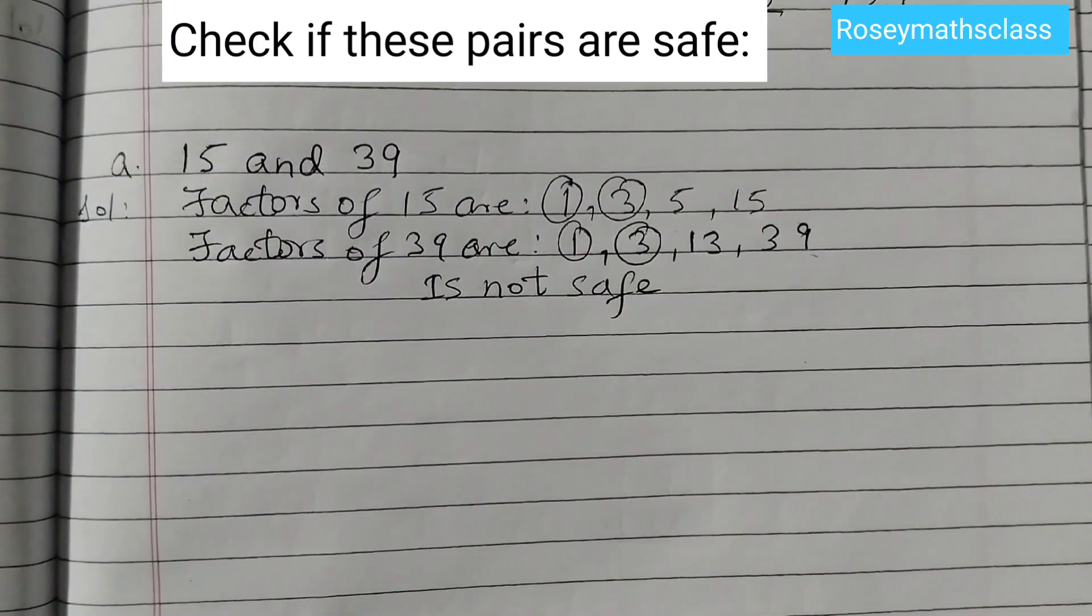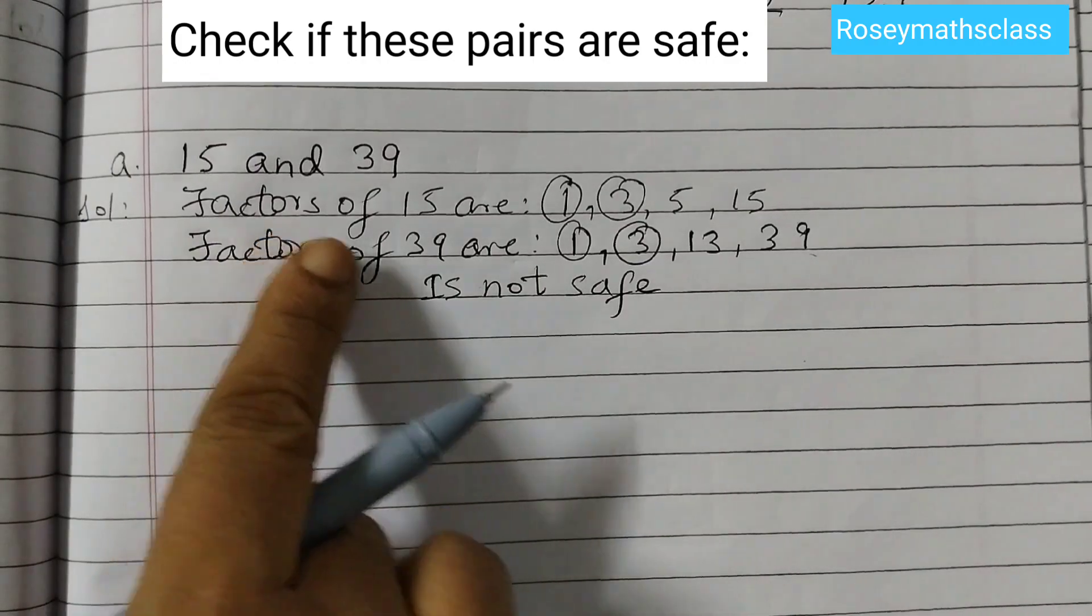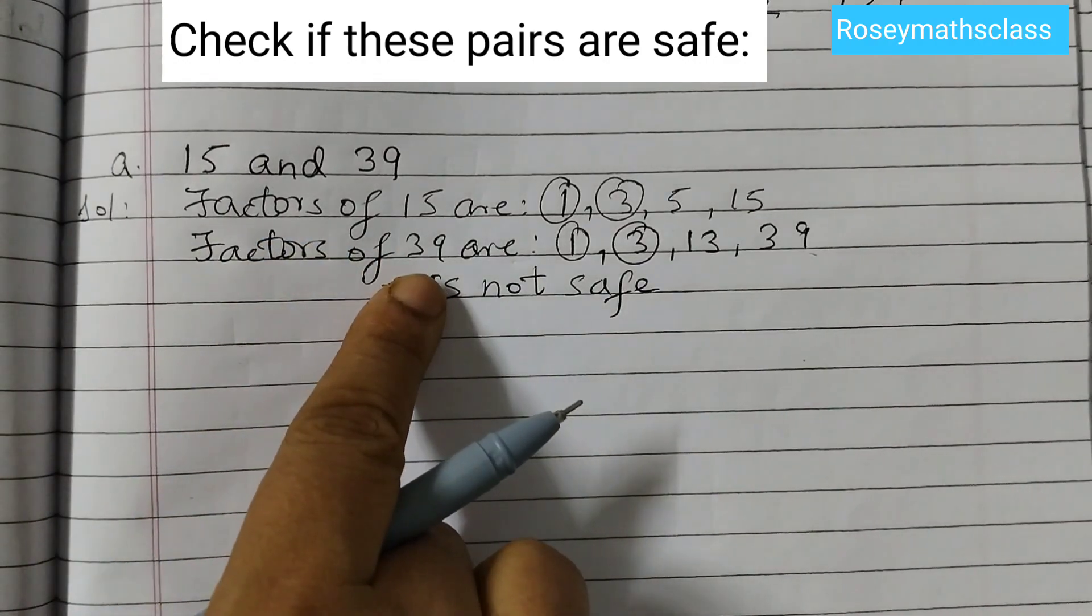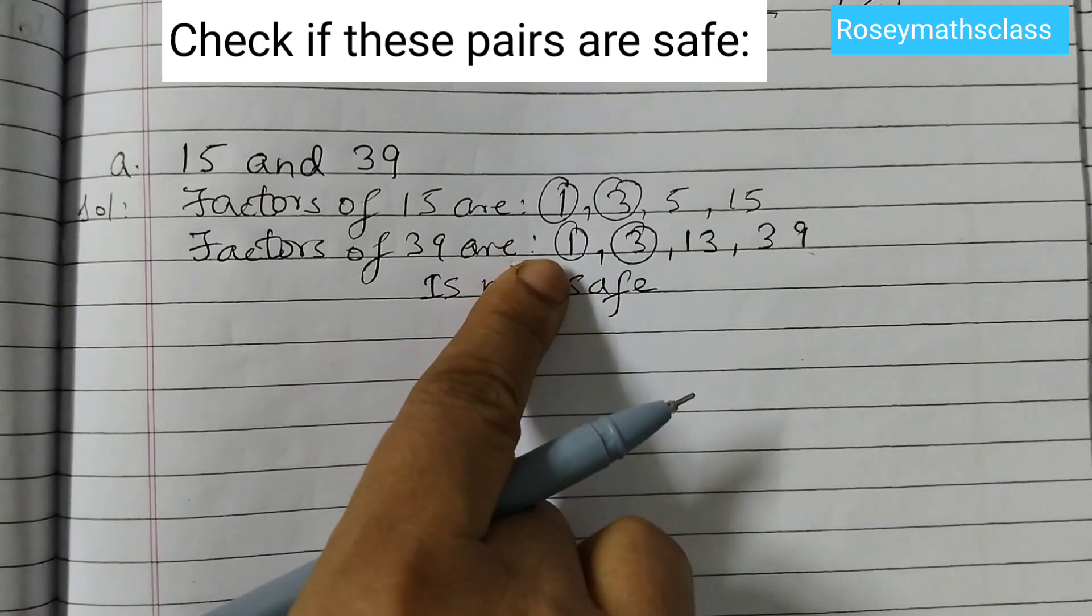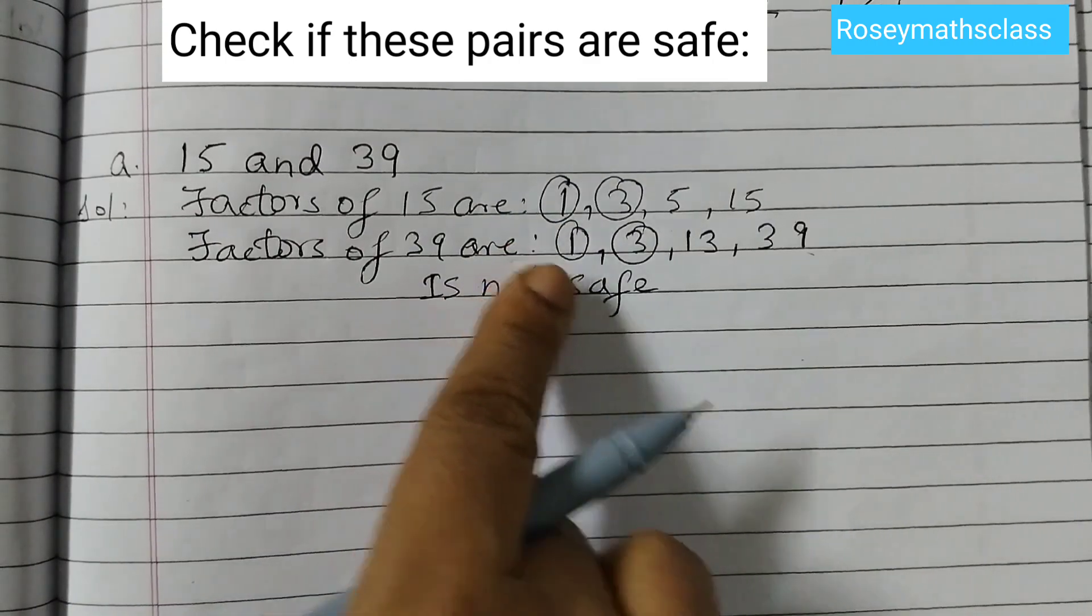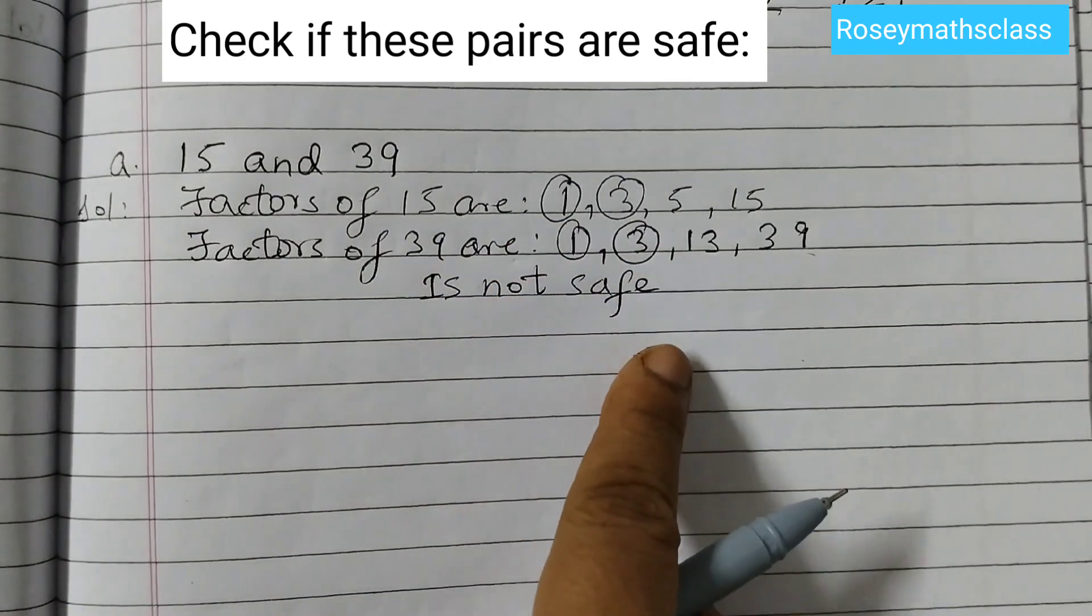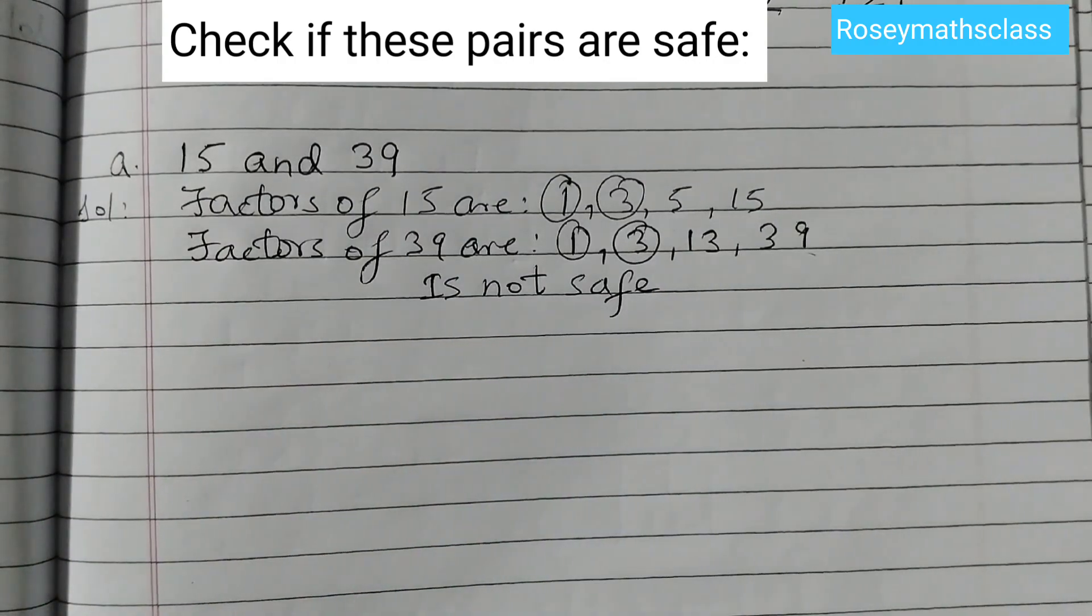To find out if the numbers are safe or not, find the factors of both numbers. If there are more common factors than just 1, then the numbers are not safe. 1 should be the only common factor. If you have any other common factor apart from 1, then the pair is not safe.